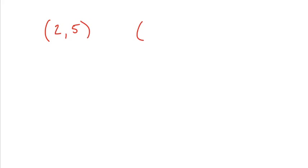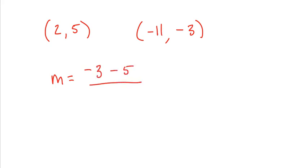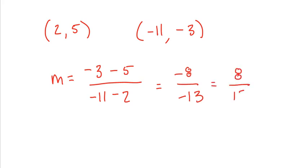Average rate of change doesn't require any derivatives at all. For example, if I gave you two points and said find the average rate of change between these two points — well, average rate of change is slope. I know how to find the slope between two points. I just take the second y minus the first y on top, and on the bottom the second x minus the first x. Negative 3 minus 5 is negative 8; negative 11 minus 2 is negative 13. The negatives cancel, and my slope is 8 over 13. So this would be the average rate of change between these two points.